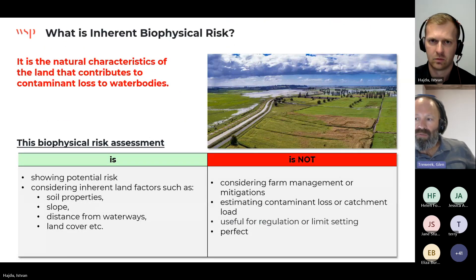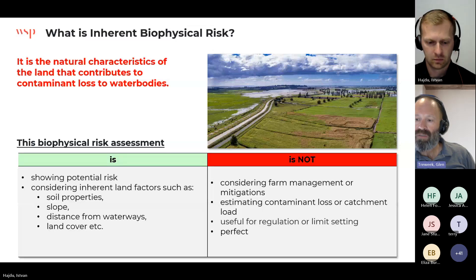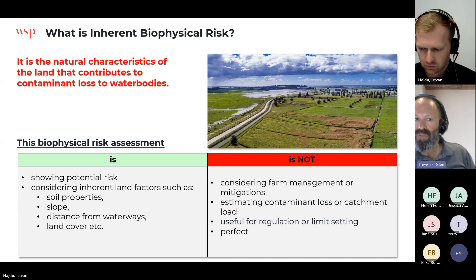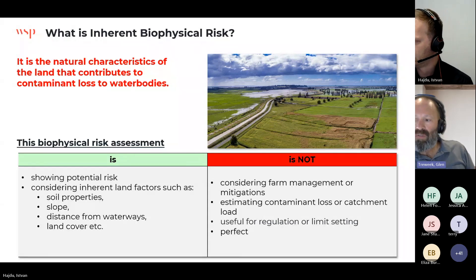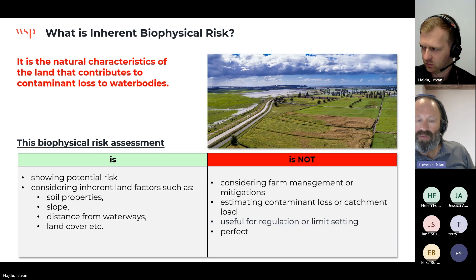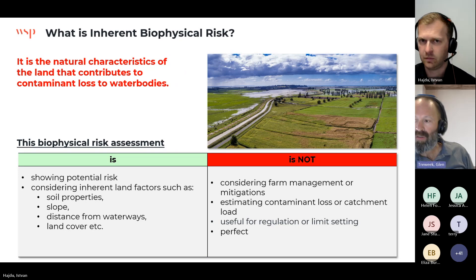So what is inherent biophysical risk? It considers factors of the land that aren't easily changed, such as soil properties, slope angle, climate, distance from waterways, and land cover such as pasture or trees. It shows where the risk of contaminant loss might be. Importantly, it does not consider farm management practices or mitigations a farmer may have implemented, and it does not estimate actual contaminant load — so it is not useful for regulation or limit-setting.